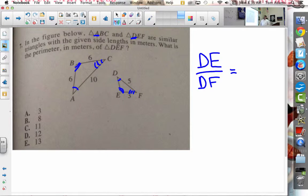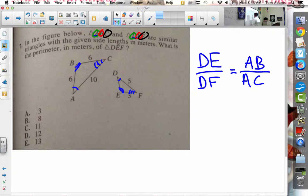Well, D corresponds with A, and F corresponds with C. So E corresponds with B. I could do it this way too. A corresponds with D, B corresponds with E, and C corresponds with F.